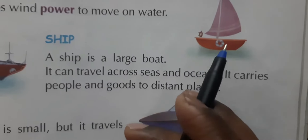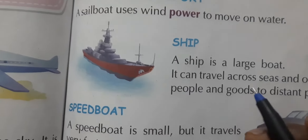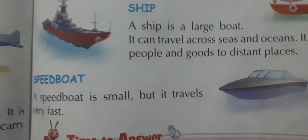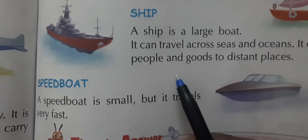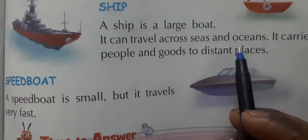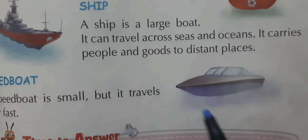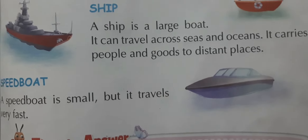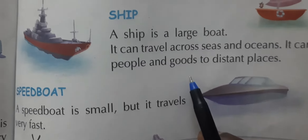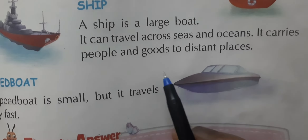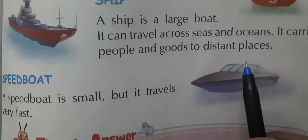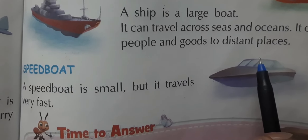Next is the ship — a very large boat. A ship is a large boat made of iron. It can travel across seas and oceans. It carries people and goods to distant places — meaning it transports people and cargo from one country to another.